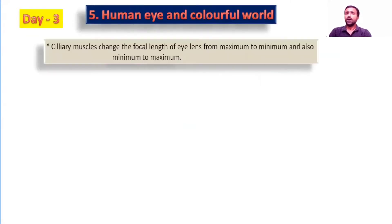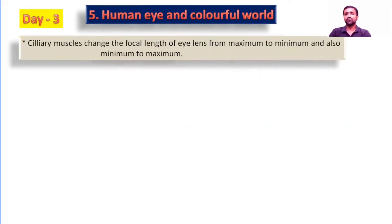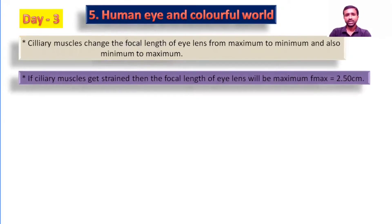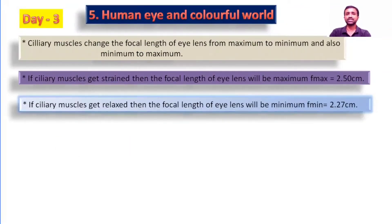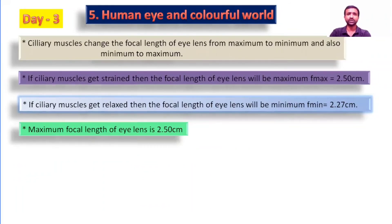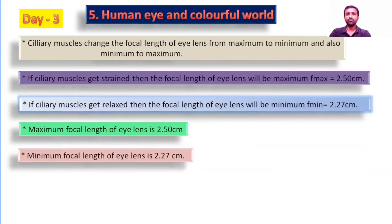Ciliary muscles change the focal length of the eye lens from maximum to minimum and also minimum to maximum. If ciliary muscles get strained, then the focal length of the eye lens will be maximum — f-maximum is equal to 2.50 centimeters. If ciliary muscles get relaxed, then the focal length of the eye lens will be minimum — f-minimum is equal to 2.27 centimeters.